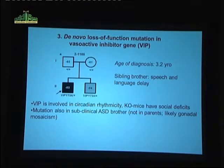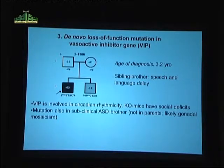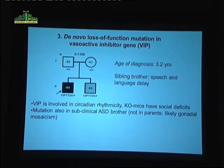When we went back and looked at the entire family, we could see that it was not in either biological parent, but it was carried in the second-born male sibling. He had been collected before the typical age of diagnosis — at age two. When we went back and looked three or four years later, he's on the spectrum, but with a less severe form of autism compared to his brother. VIP is known to be involved in circadian rhythmicity and social deficits based on knockout mouse studies.